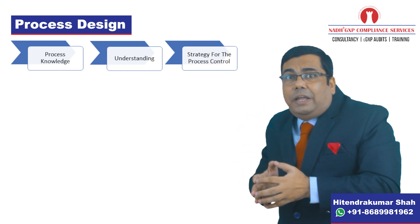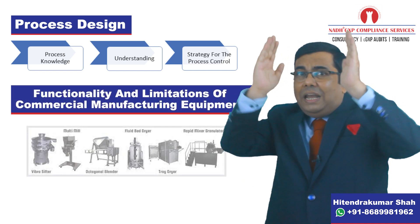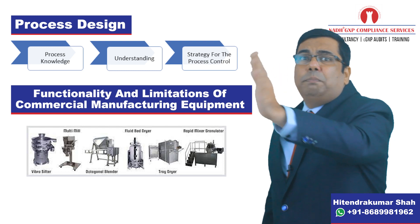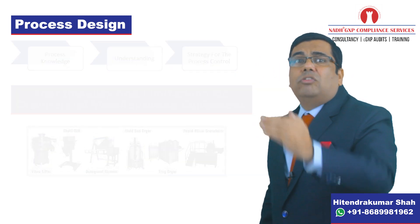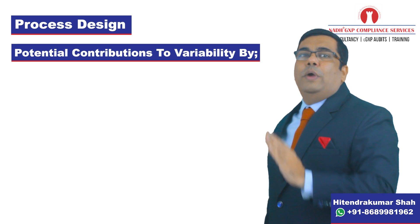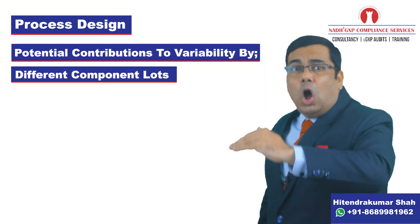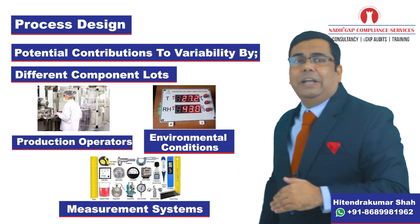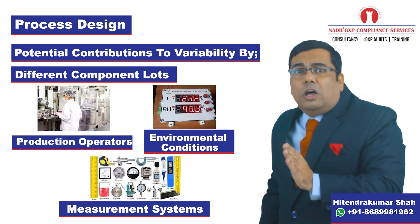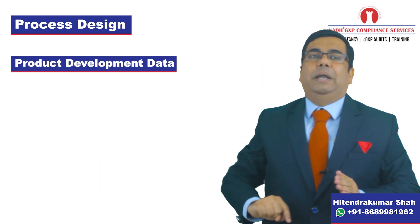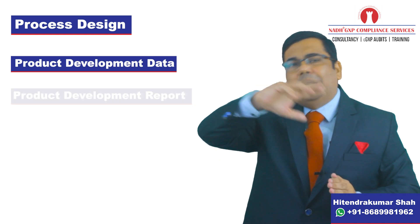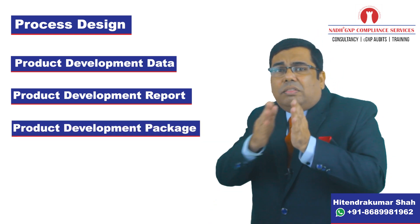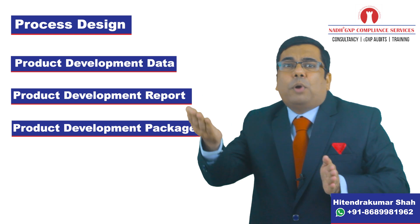We should remember that the functionality and limitations of the commercial manufacturing equipment should be considered in the process design, as well as potential contributions to variability by different components, lots, production operators, environmental conditions, and measurement systems in the production settings. We need to refer to the product development data — the product development report or product development package — and verify how the product is developed.